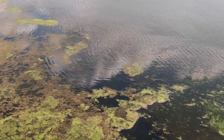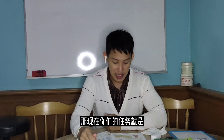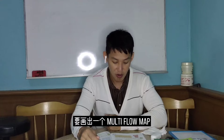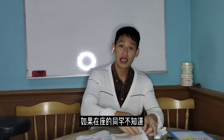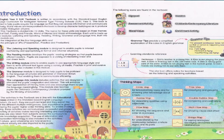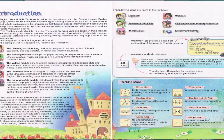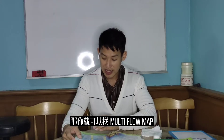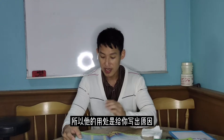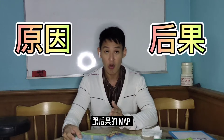So Farah talked about the causes and effects of water pollution. Now your task is to create a multi-floor map. There are thinking maps for you to refer to. You can find the multi-floor map — it is for showing cause and effect — for you to write the maps.